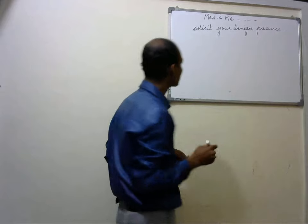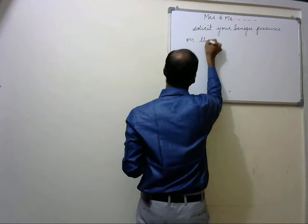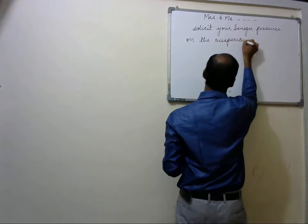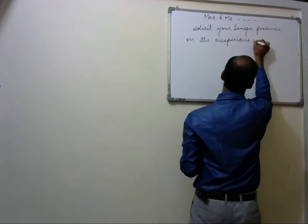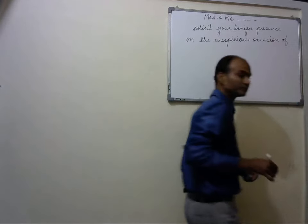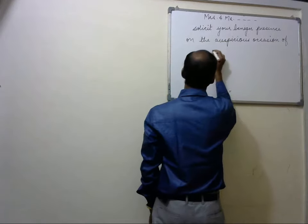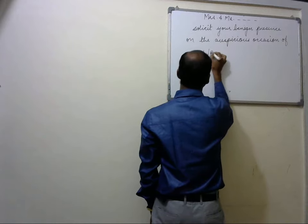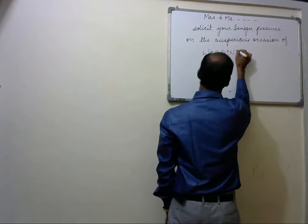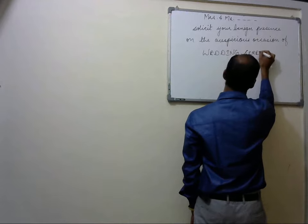After this you must write about the occasion. On the auspicious occasion of — now what is the occasion, that must come here. For example: wedding ceremony. You can capitalize the first letter of each word. After this, 'of their daughter' or 'son' as per the question — whatever is given in the question. In weddings, the names of both the bride and groom should be written here, joined with 'weds' or 'with', as you see in real invitation cards.